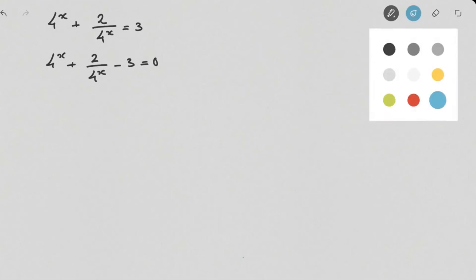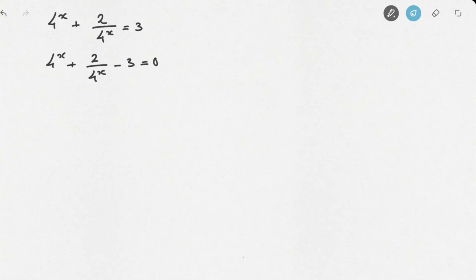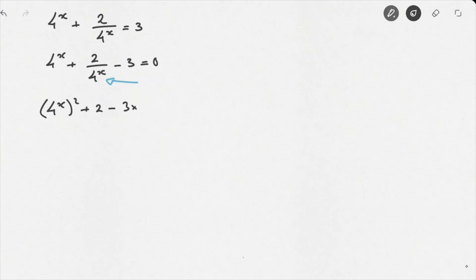We're going to do exactly as we did in the previous example. What's in our way here is the 4 to the power of x in the denominator, so we'll multiply all terms in the equation by 4 to the power of x. That leads us to 4 to the power of x squared plus 2 minus 3 times 4 to the power of x equals 0. Rearranging and gathering the 4 to the power of x terms first gives: 4 to the power of x squared minus 3 times 4 to the power of x plus 2 equals 0.